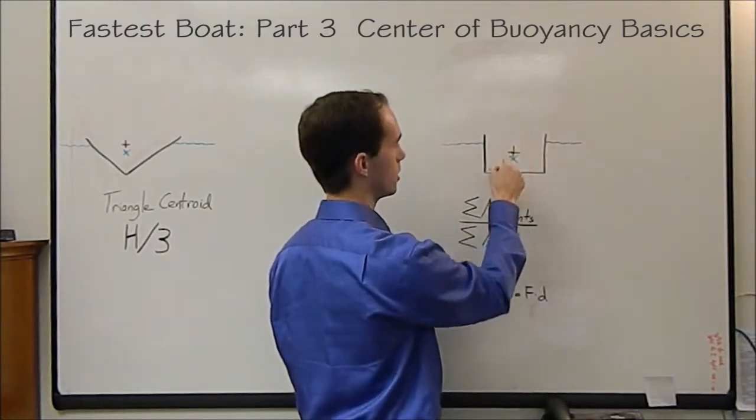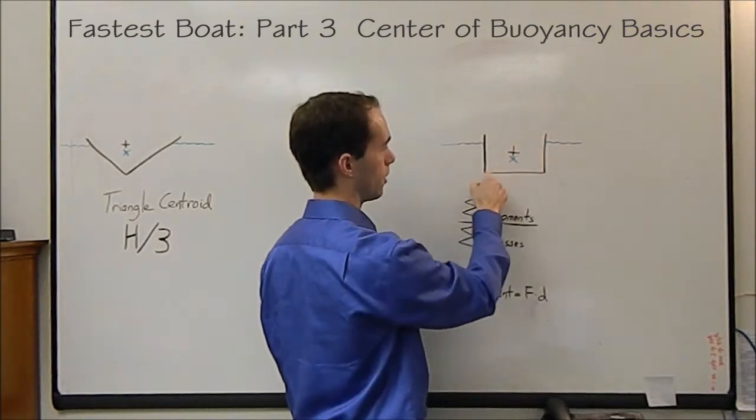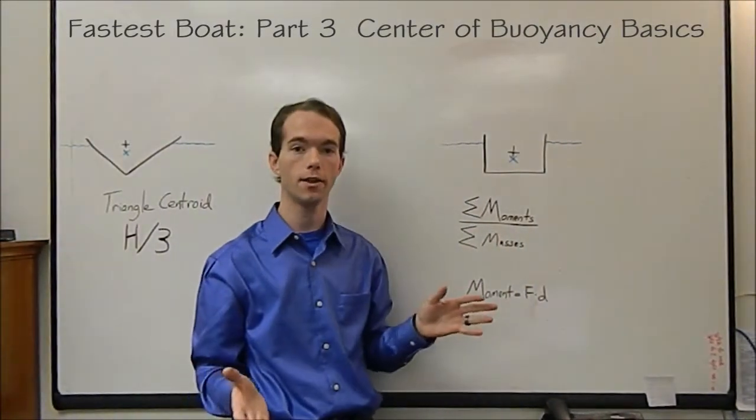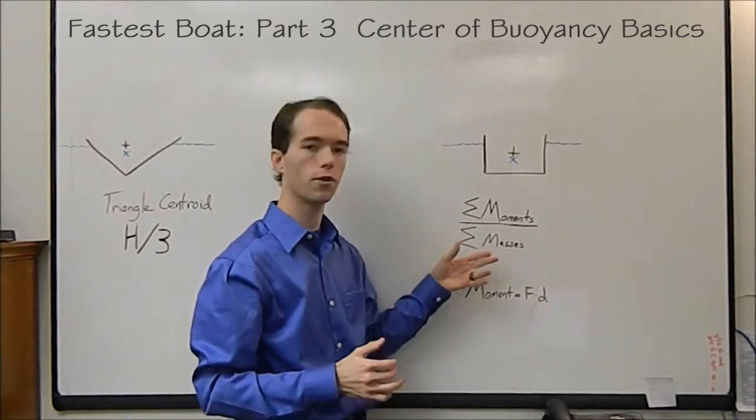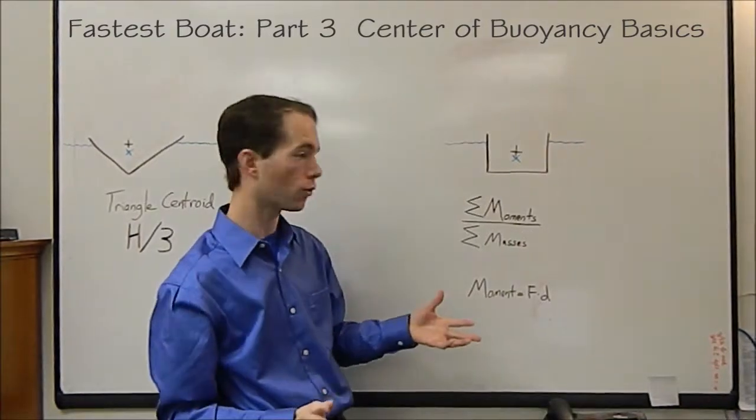If you drew diagonals, there's the center of the box. And if you drew diagonals from the water line to the bottom, the center of buoyancy is there. Simply, to find the centroid of anything, the center of gravity or center of buoyancy, it's the sum of the moments over the sum of the masses, which moment is a force times a distance, which is also the same thing as a torque.